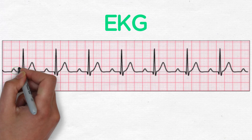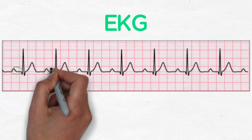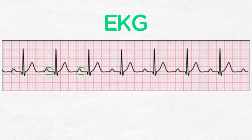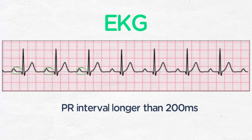Specifically, the only information you need to diagnose a first-degree AV block is a PR interval longer than 200 milliseconds, which is one large box on the EKG. That's it.